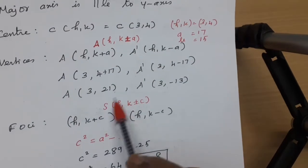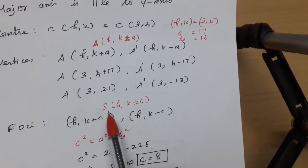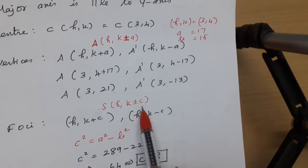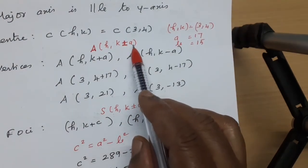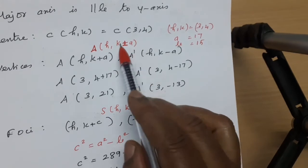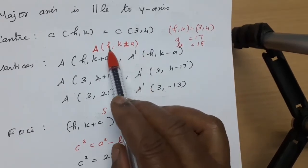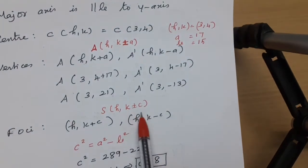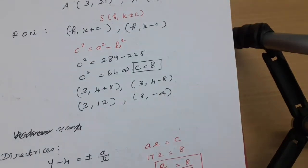Remember: along the Y axis, the foci are h comma k plus or minus c, and the vertices are h comma k plus or minus a. Because along the Y axis, you always add to the k value. This is very important to remember.